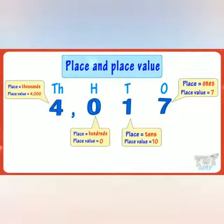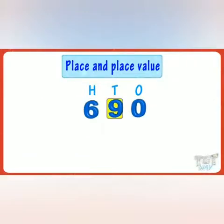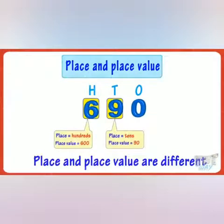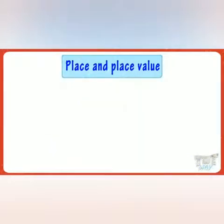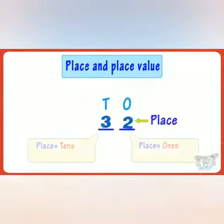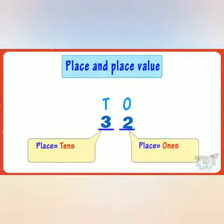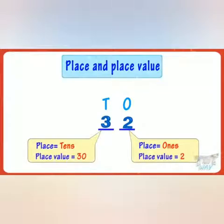So kids, now you have a fair idea of what place and place value are. If a digit comes more than once in a number, its place and place value will be different each time. Today we have learned: place is the position of the digit in a number, and place value is how much the digit is worth.